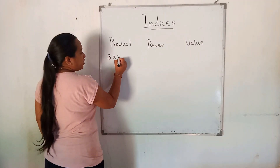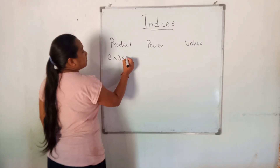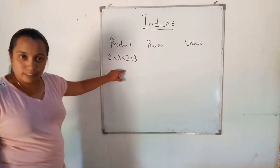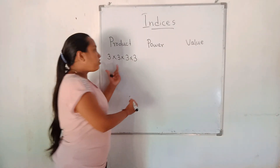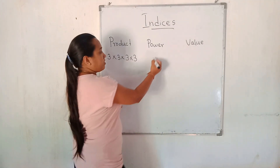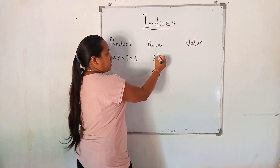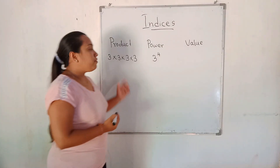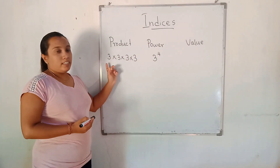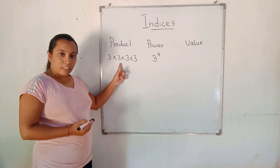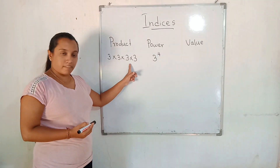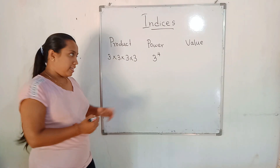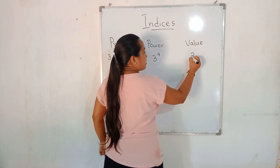3 multiplied by 3 multiplied by 3 multiplied by 3 — this is the product. How do we write this product as a power? It is 3 to the power 4. The value is obtained by: 3×3=9, 9×3=27, 27×3=81. So 81 is the value.